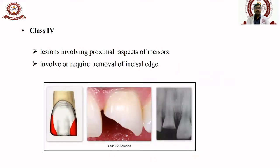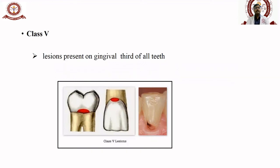Class IV is similar to Class III in direction but involves the proximal surface along with the incisal edge. In Class III the incisal edge is not involved, but in Class IV the incisal edge is also involved. It can happen due to caries or due to fracture — for example, a food fracture — where both the proximal surface and incisal edge are involved.